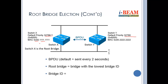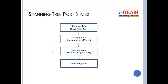In spanning tree, a port can be in one of the following states: blocking state, listening state, learning state, or forwarding state.